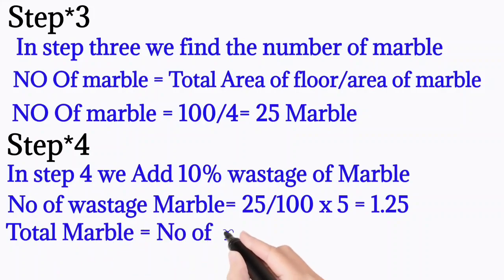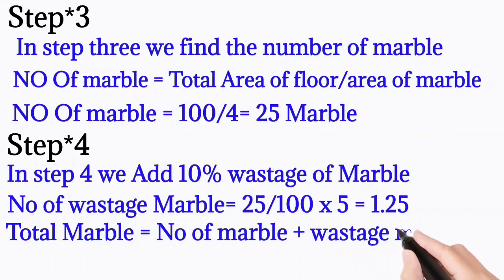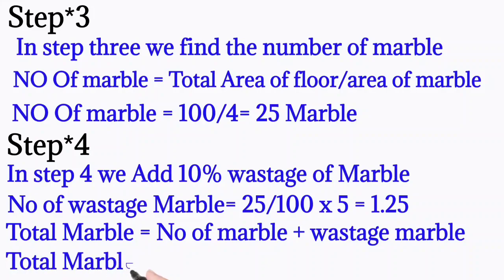Total marble is equal to number of marble plus wastage of marble. So here number of marble is 25 and wastage of marble is 1.25. Total marble is 26.25, so we can say 27 marbles.